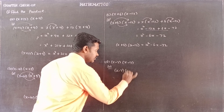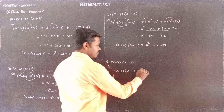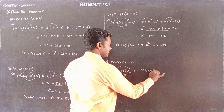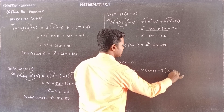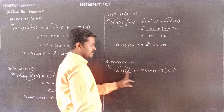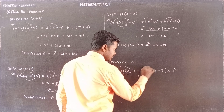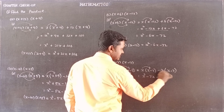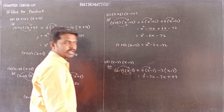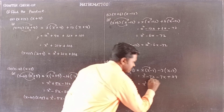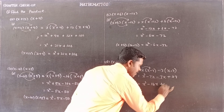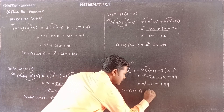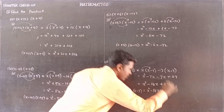Subdivision D: x minus 7 into x minus 7, which is x minus 7 squared. Expanding: x into x gives x squared; x into minus 7 gives minus 7x; minus 7 into x gives minus 7x; minus 7 into minus 7 gives plus 49. Combining: minus 7x minus 7x gives minus 14x. Therefore x minus 7 into x minus 7 equals x squared minus 14x plus 49.